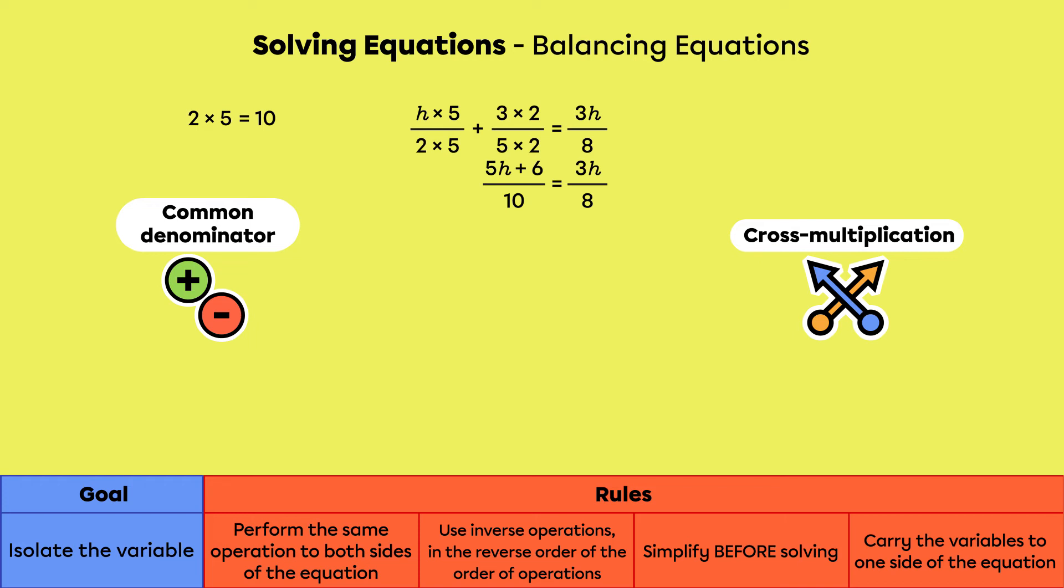Now there is only one fraction on each side, so we can cross-multiply, leaving us with 8 times (5h plus 6) equals 10 times 3h.